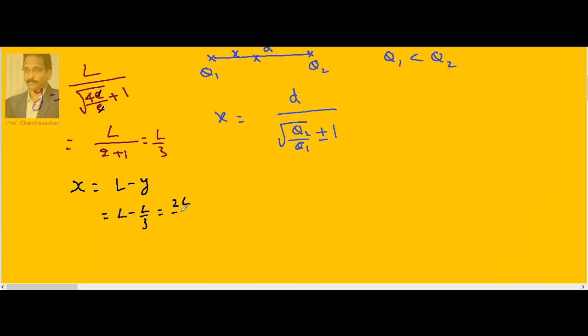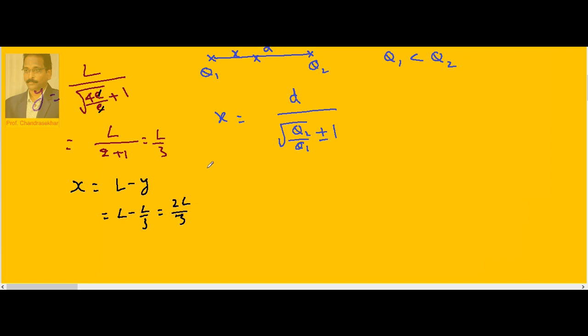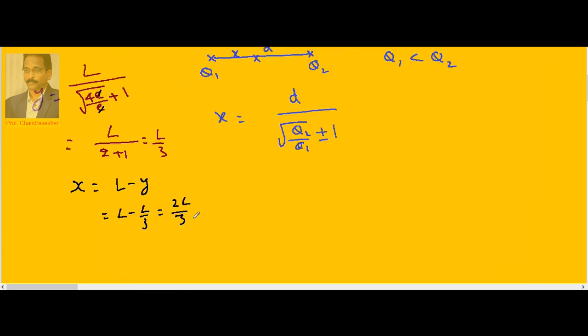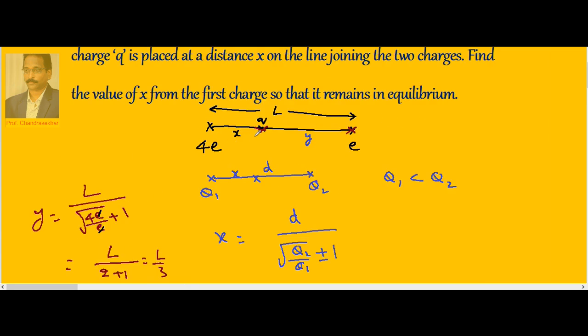So the answer becomes 2L by 3. If I keep small q at a distance of 2L by 3 from the stronger charge 4E, this small q will be in equilibrium.